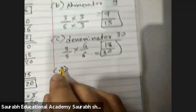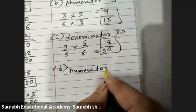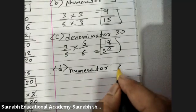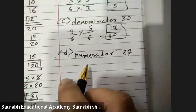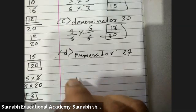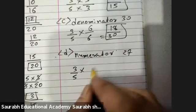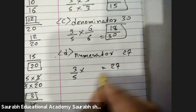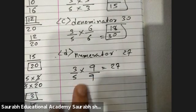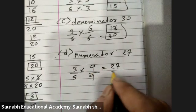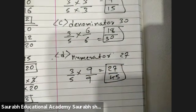And last, D, numerator 27. Three by five. For getting 27, I should multiply with 9. So denominator should also be multiplied with 9. Five nines are 45. Final answer.